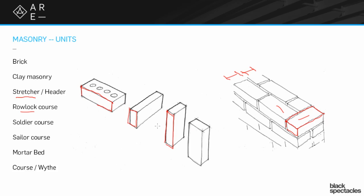The soldier course is a way of graphically claiming the header quality of the window — showing it as a design element that emphasizes the opening and creates a nice look. Rowlock you'll often see as part of the sill. There are many different ways you can arrange these things; some are very complicated, but those are the very typical ones.